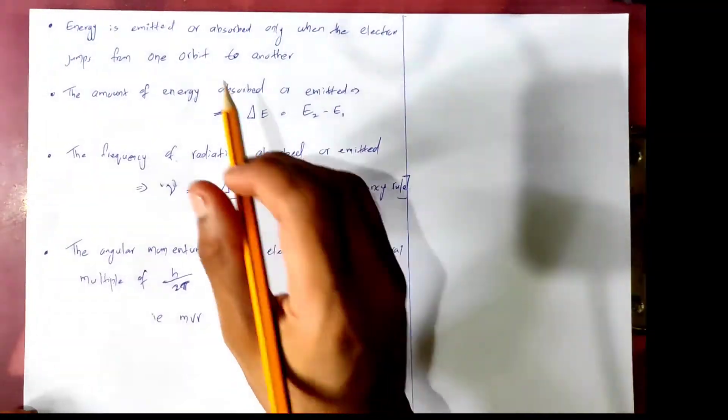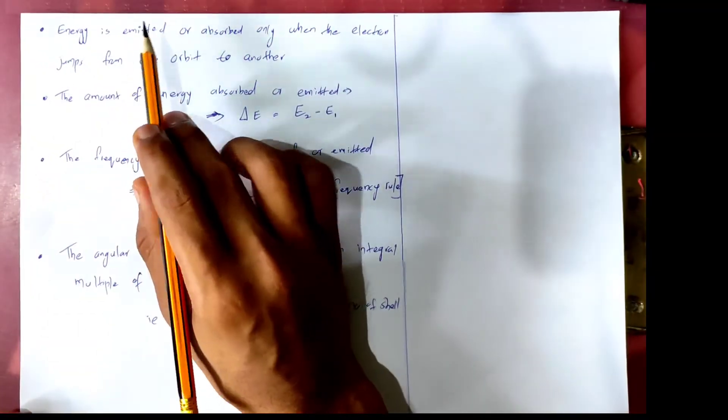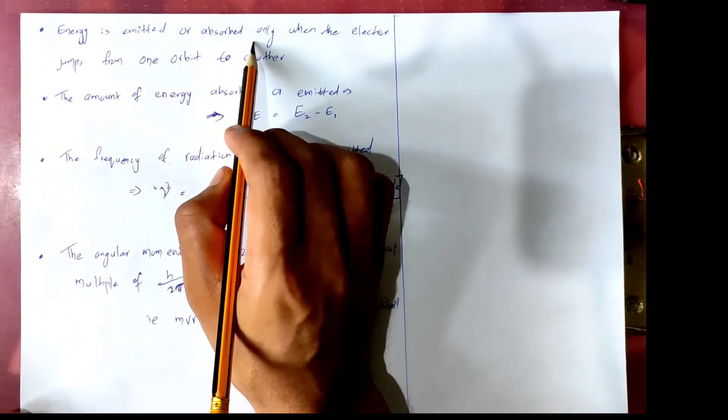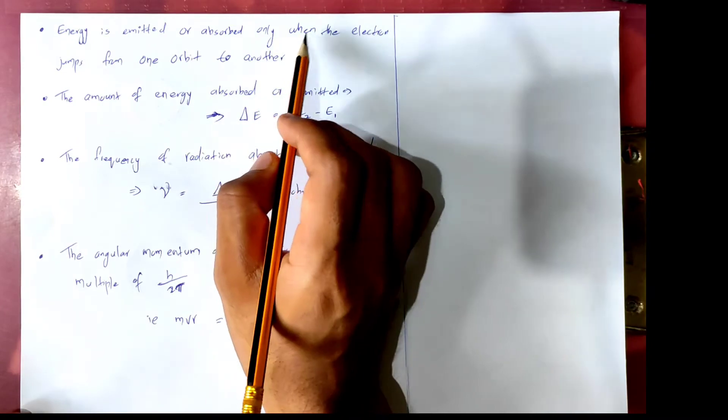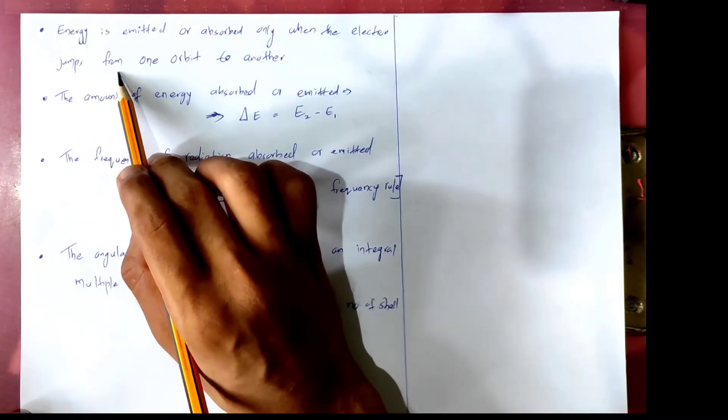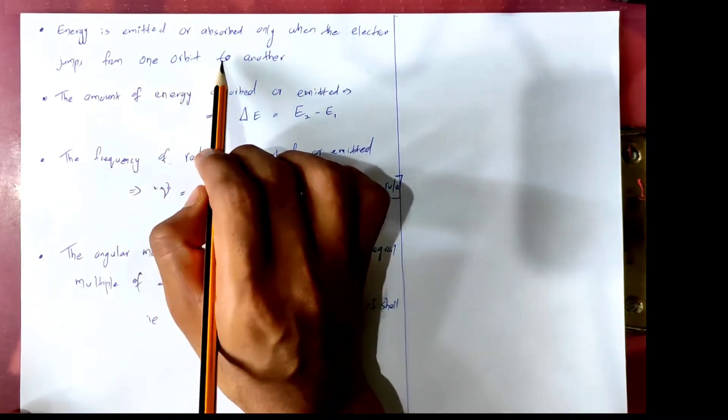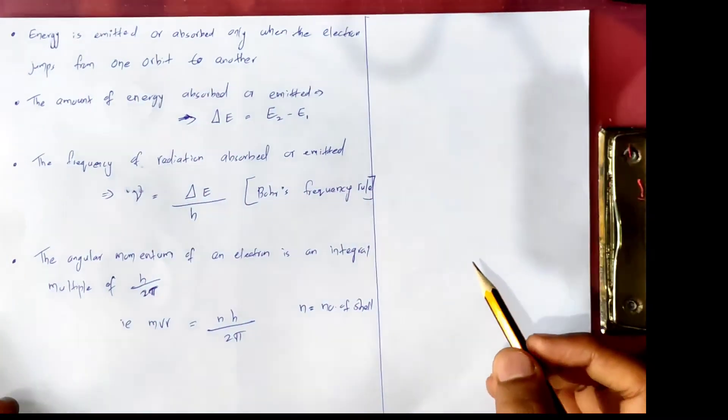Energy is emitted or absorbed only when the electron jumps from one orbit to another.